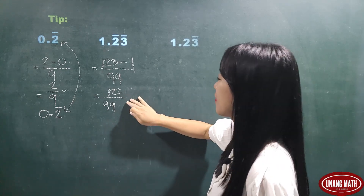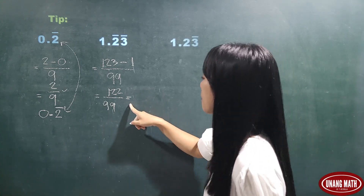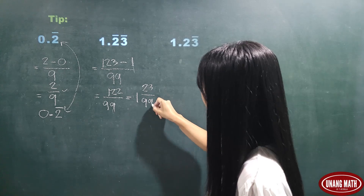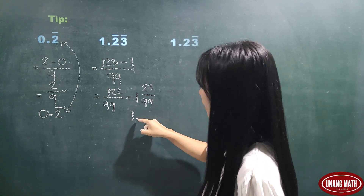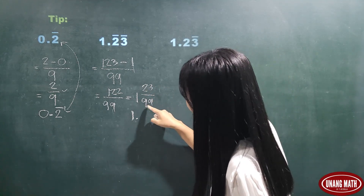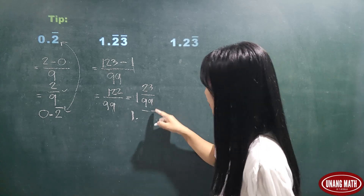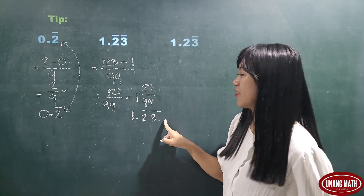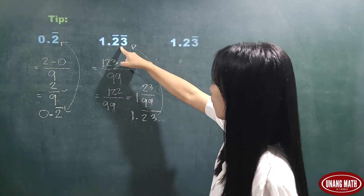Let's check if 122 over 99 is correct. Converting to a mixed number gives 1 and 23 over 99. The whole number 1 matches our original whole number, so we write 1 point something. Looking at 23 over 99: the denominator 99 tells us these are repeating digits, and the numerator gives us 2 and 3 as the repeating digits. So we have 1.23 repeating — the same as our given number. Correct!